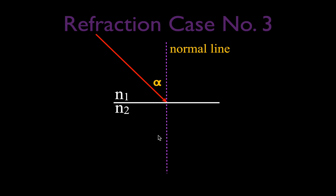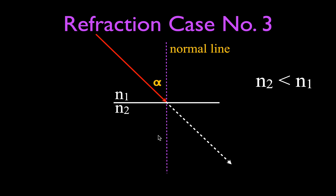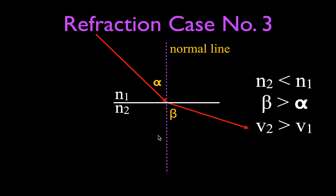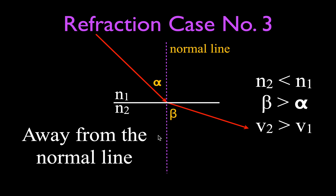Case number three is where the index of refraction of the bottom material is less than the top. When that happens, the light ray bends away from the normal line, and the angle of refraction is greater than the angle of incidence. That's because the speed of the light in the bottom material is greater than in material number one. So those are the only three cases: the materials have the same index of refraction, the bottom material is greater, or the bottom material has a lower index of refraction.